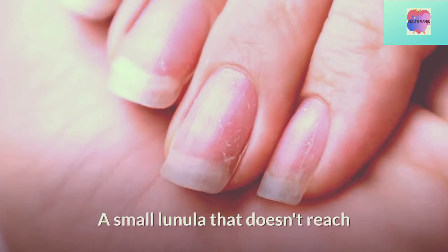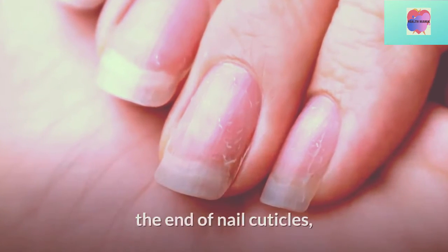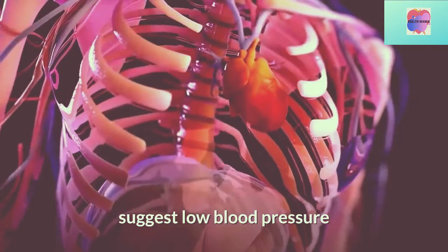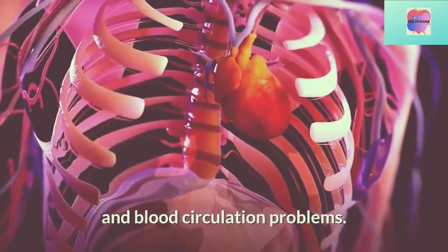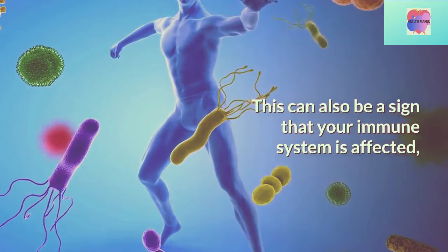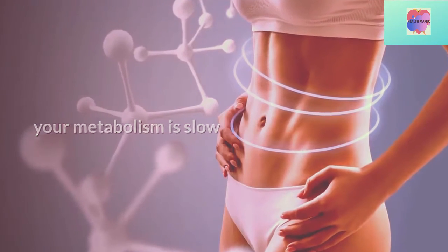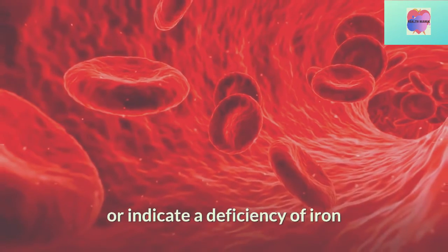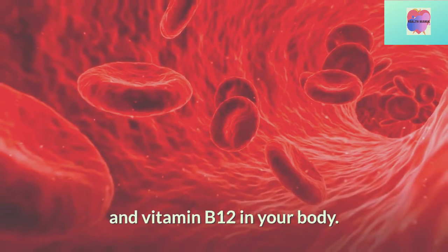Small lunula. A small lunula that doesn't reach the end of nail cuticles suggests low blood pressure and blood circulation problems. This can also be a sign that your immune system is affected, your metabolism is slow, or indicate a deficiency of iron and vitamin B12 in your body.